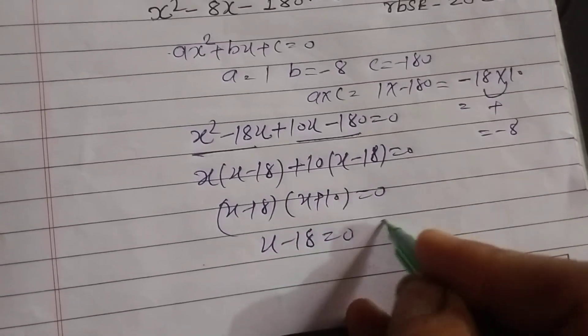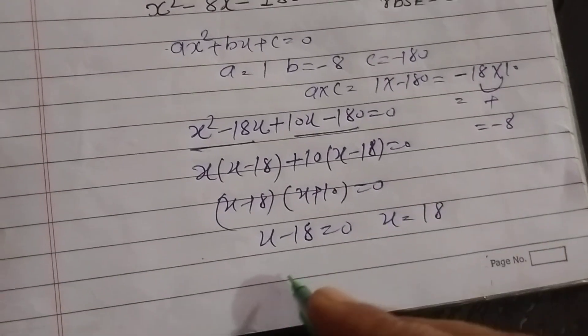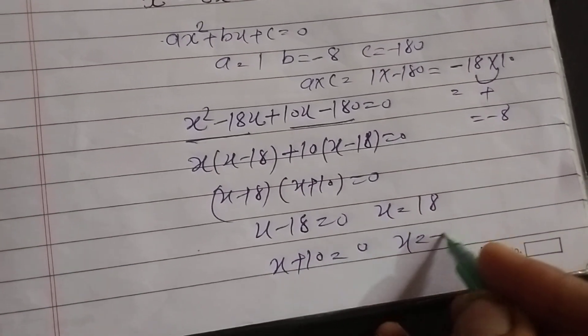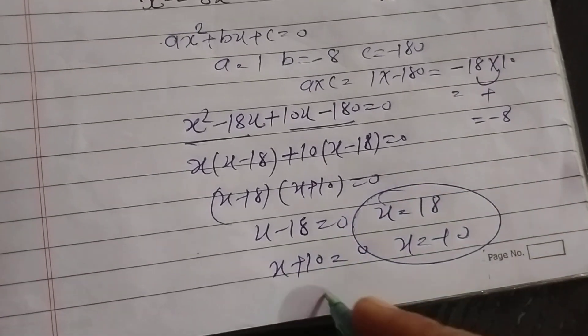x - 18 = 0, which means x = 18. x + 10 = 0, which means x = -10. So these are the two zeros.